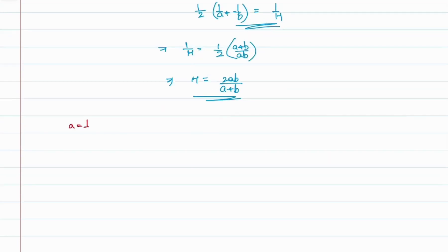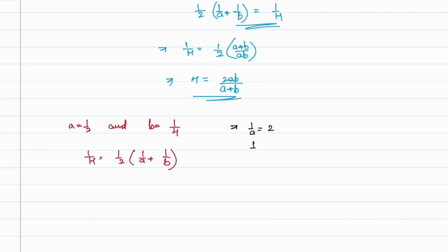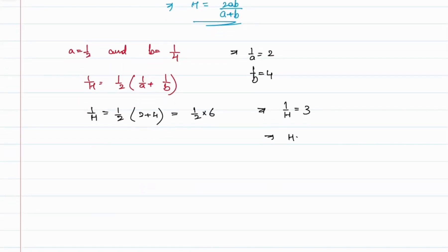Suppose we take a = 1/2 and b = 1/4. Using the formula: 1/H = (1/2)(1/a + 1/b). From the given information, 1/a = 2 and 1/b = 4. Substituting gives 1/H = (1/2)(2 + 4) = (1/2)(6) = 3.